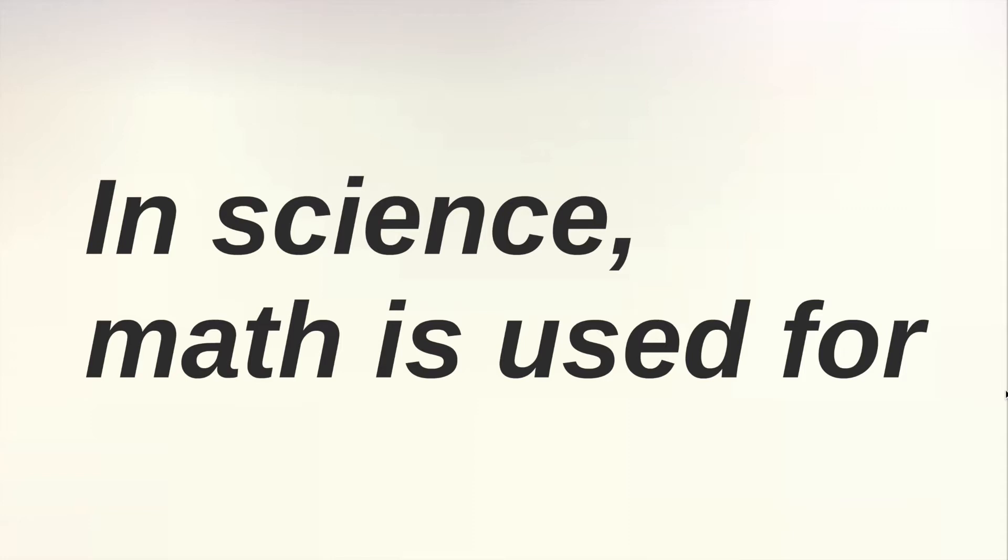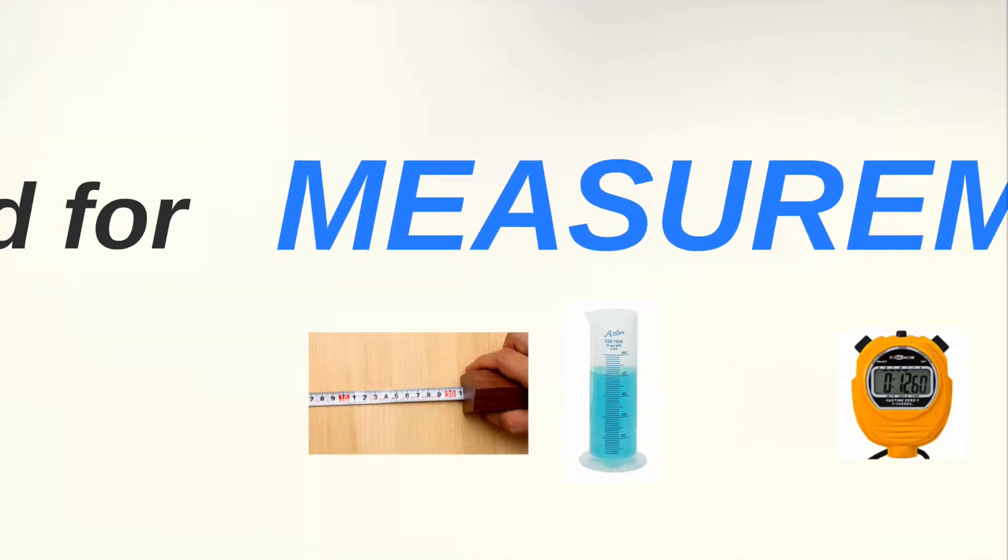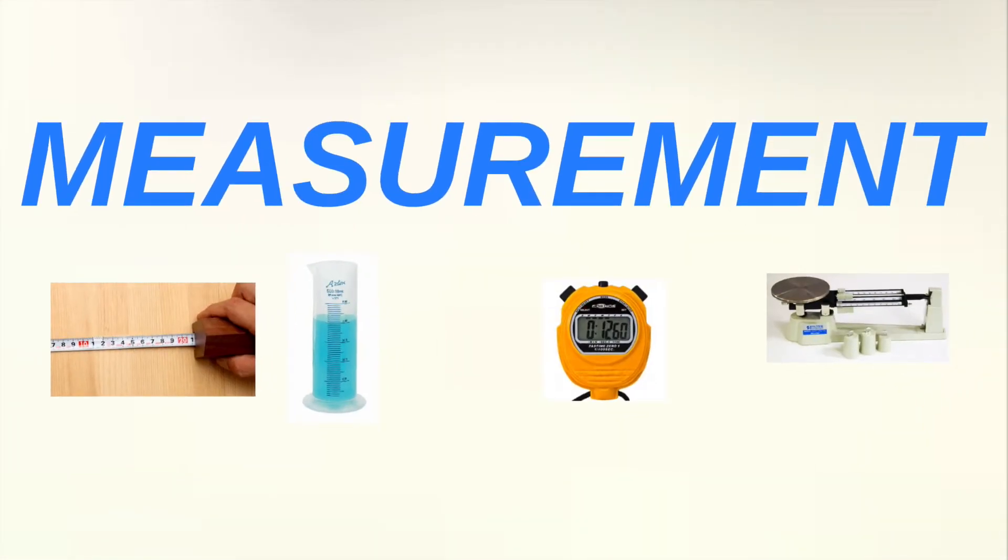Now in science, math is used primarily for measurement. This is what set science apart from all of those philosophies such as alchemy that came before it. So measurement is key to making something scientific, and the math is critical for us to keep precise measurements and then be able to calculate and analyze those measurements.